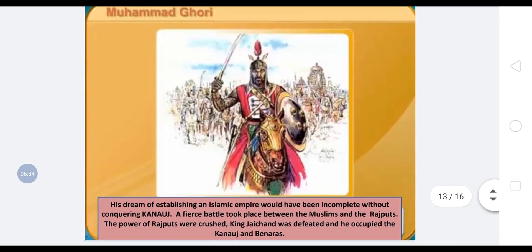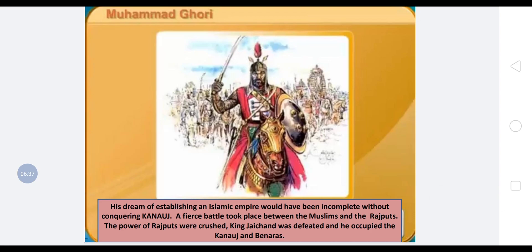His dream of establishing an Islamic empire would have been incomplete without conquering Kannauj. Kannauj was a very powerful kingdom, and all rulers wanted to show their supremacy by controlling it. A fierce battle took place between the Muslims and the Rajputs — King Jaychand was defeated and Ghori occupied Kannauj and Banaras.